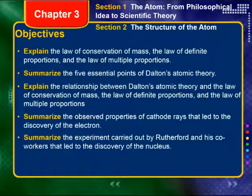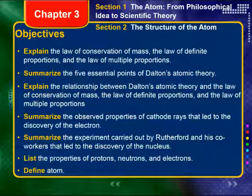So what have we done so far in this combined section? We have explained the law of conservation of mass, the law of definite proportions, and the law of multiple proportions. We have summarized the five essential points of Dalton's atomic theory and its relationship to those laws. We have summarized the observed properties of cathode rays that led to the discovery of the electron, summarized Rutherford's experiment that led to the discovery of the nucleus, listed the properties of protons, neutrons, and electrons, and defined the atom. Alright chemistry, I will see you next period.